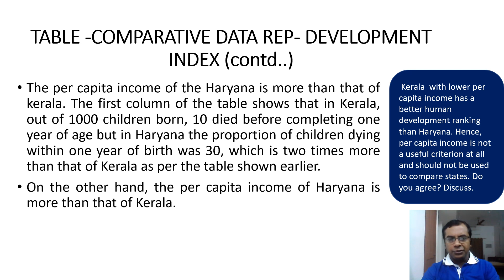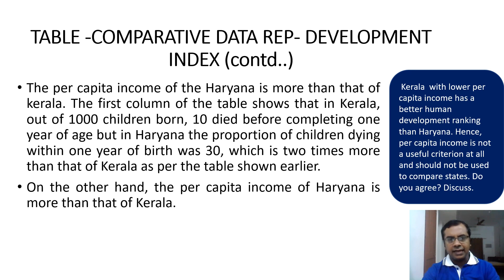Continuing with this table: the per capita income of Haryana is greater than that of Kerala, as we have seen. However, the infant mortality rate in Haryana is higher — 30 infants are dying per thousand live births in Haryana compared to Kerala's figure which is as low as 10.